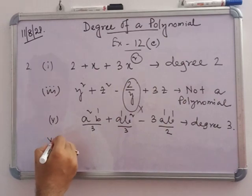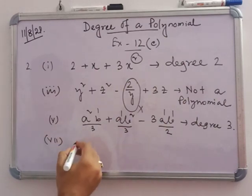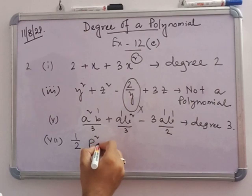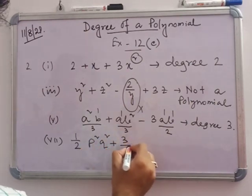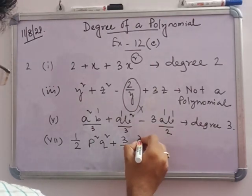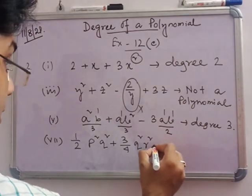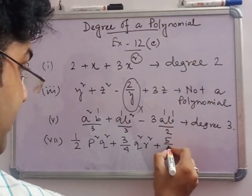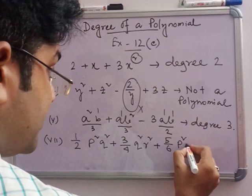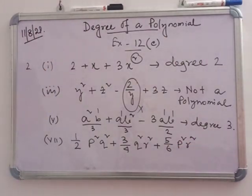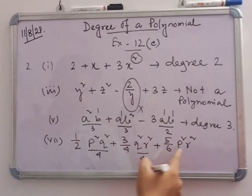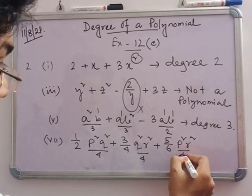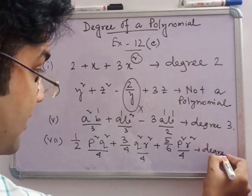In number 7: (1/2)p squared u squared plus (3/4)q squared r squared plus (5/6)p squared r squared. For each term the sum of powers is 2 plus 2 equals 4. All terms have degree 4, so the degree of the polynomial is 4.